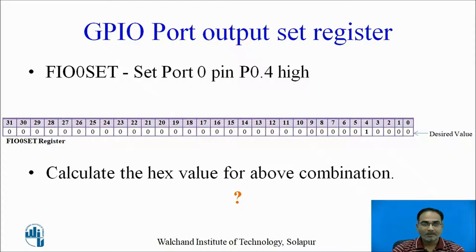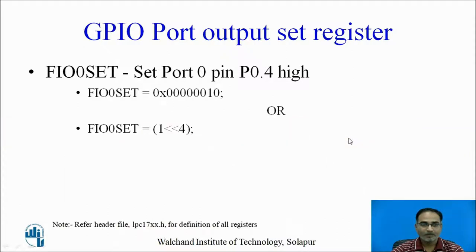Let us set port 0 pin P0.4 to logic high. This is a 32-bit format and we want port pin P0.4 high, so we should write 1 at that bit position. The hex value for this combination gives: FastIO set register = 0x00000010. This forces logic high on P0.4. You can also use the convention: 1 left-shifted by 4 bits.